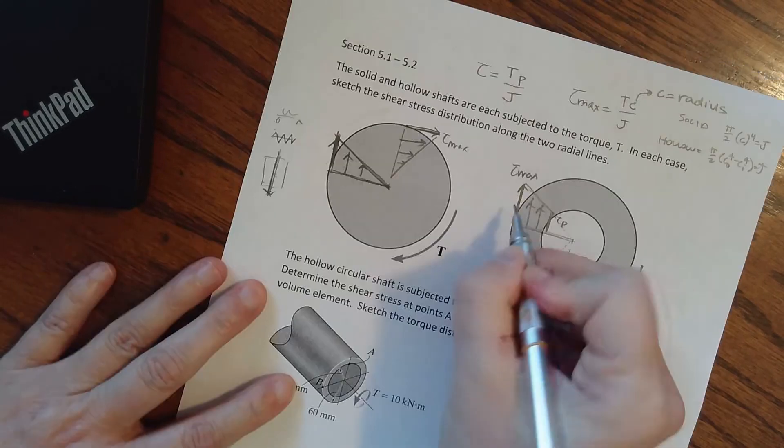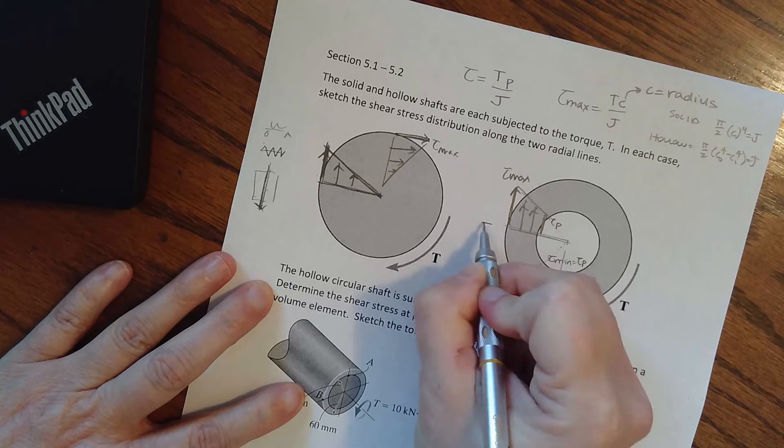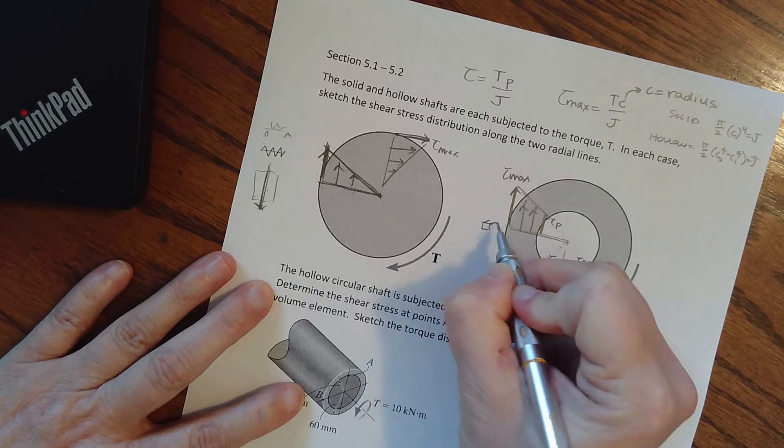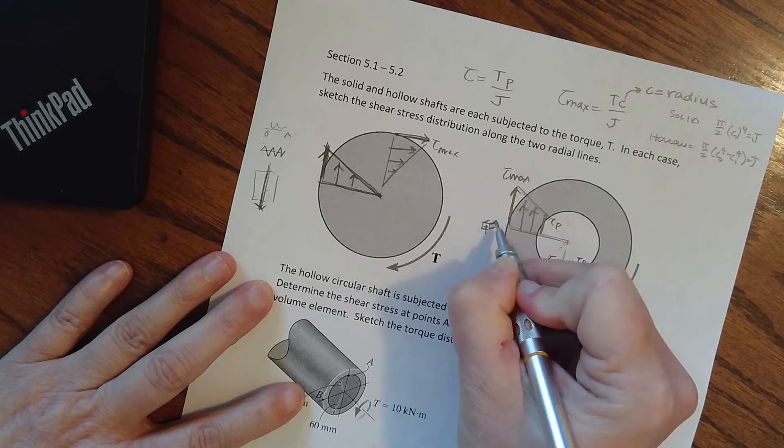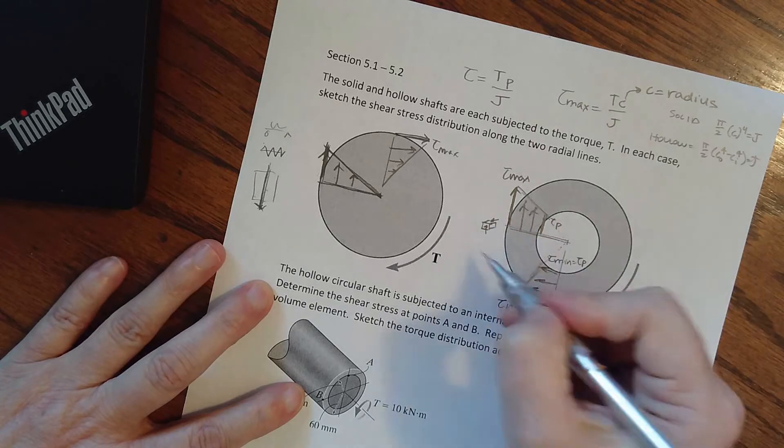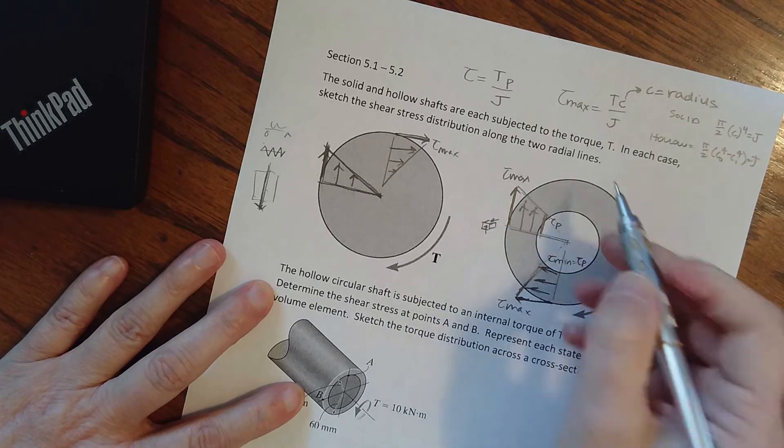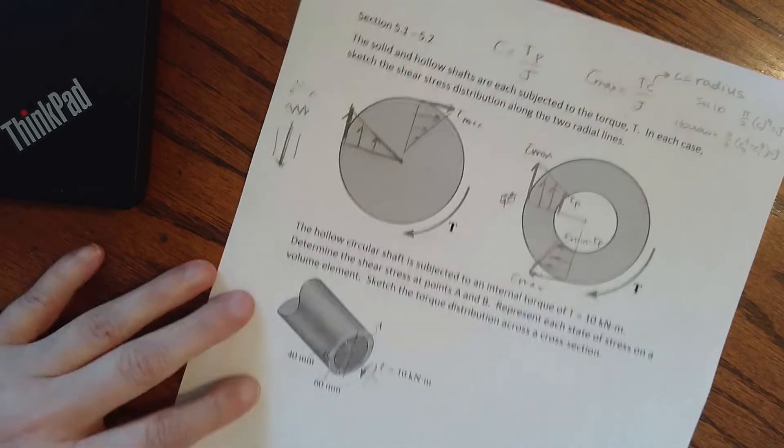If we were to pull a stress block on the outside here, then I'm going to be going up and it has to come back and meet at the corners. In here it's going to look the same, it's just going to have a different value.